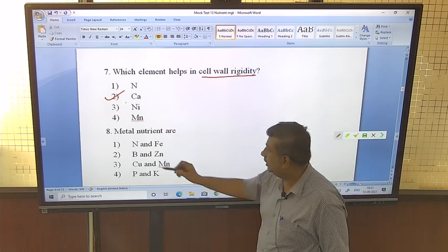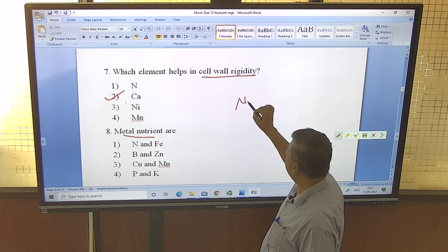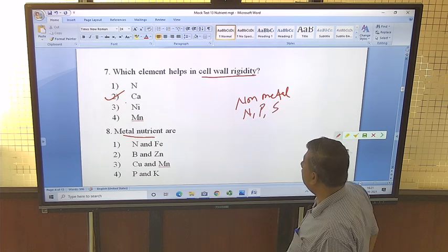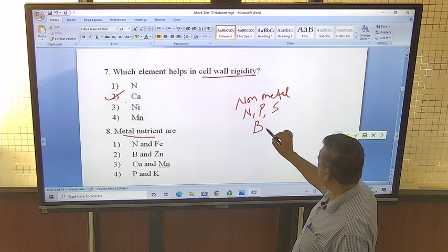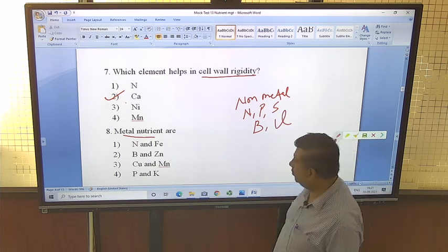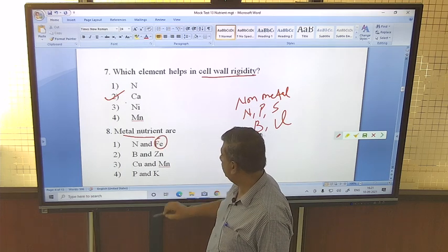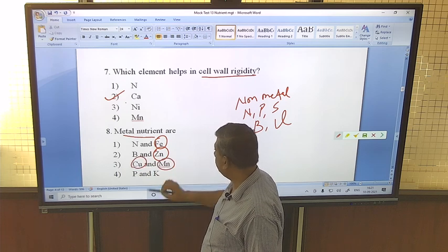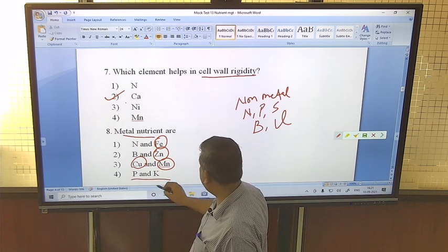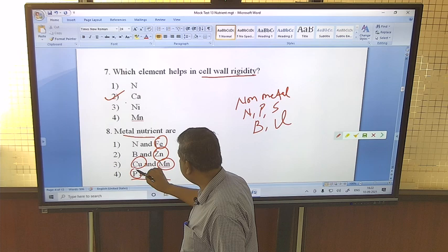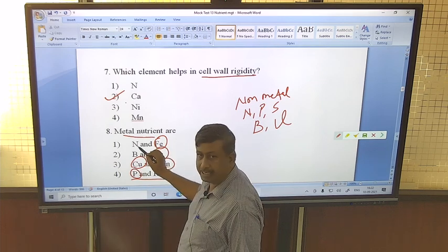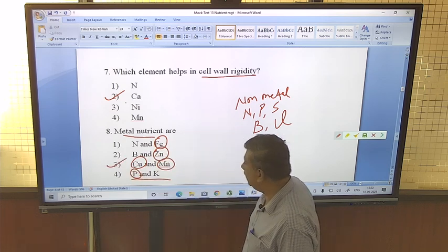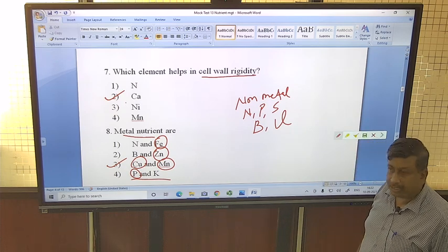Metal nutrients are - here question is asked about metal nutrients. First make the list of non-metal nutrients. These are nitrogen, phosphorus, sulphur and boron and chlorine. These are non-metal. Here this is metal, this is metal, here both are metal and these P and K, P is non-metal. It means here question is asked about both are metal nutrients. So here the option is copper and manganese. In this pair, both are metal nutrients.